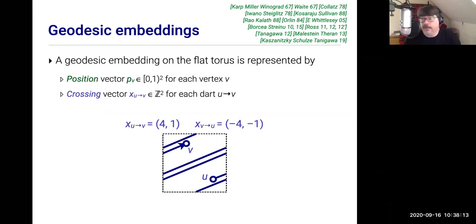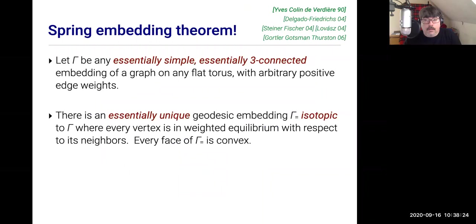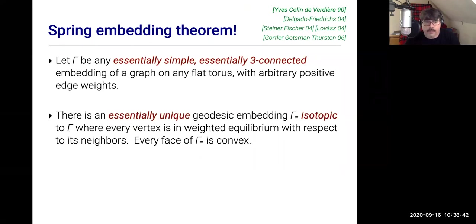This is a perfectly reasonable edge for a geodesic embedding on the torus — a geodesic wrapping around four times horizontally and once vertically. There is a version of the spring embedding theorem for geodesic embeddings on the torus. It's been proved several times independently with slight variations. The first proof, and actually much more general than what I'm stating here, was by Yves Colin de Verdière in 1990.